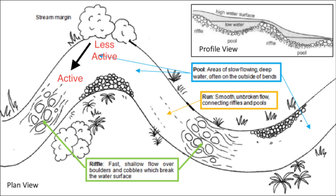The third standard component of a river is called a run. These are the areas of the river upstream from a riffle that have the characteristics of smooth unbroken flow, and they connect the riffles to the pools.